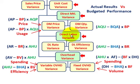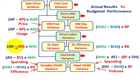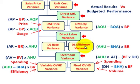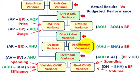Moving down to our direct labor variances, we have a direct labor rate variance and a direct labor efficiency variance. For the labor rate variance, that's the difference between your actual rate per hour and your budgeted rate allowed times some actual hours used. For the direct labor efficiency variance, that's the difference between the actual hours used and the budgeted hours allowed times the budgeted rate.